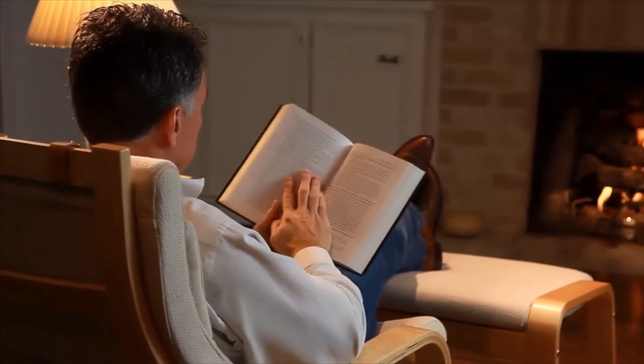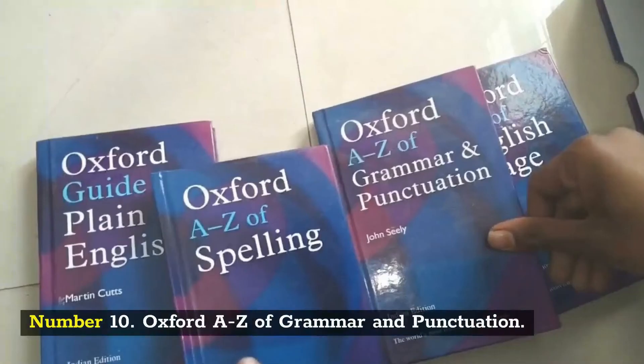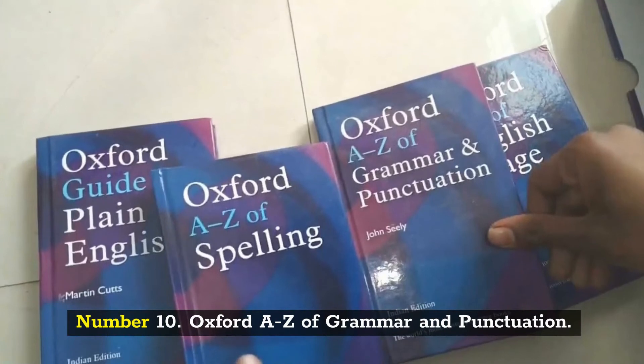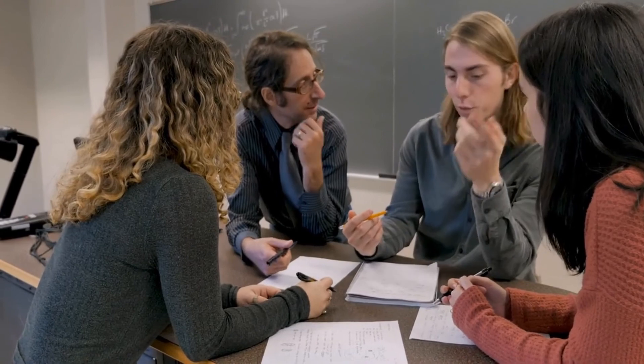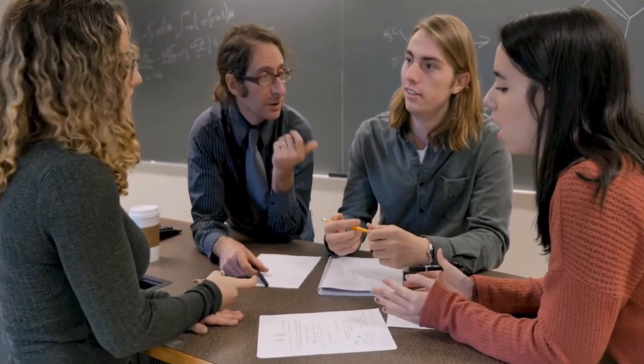Number 10: Oxford A to Z of Grammar and Punctuation. John Seeley's book has the same general format and style as its predecessor, but it contains some more punctuation information that might be helpful in some advanced teaching situations.